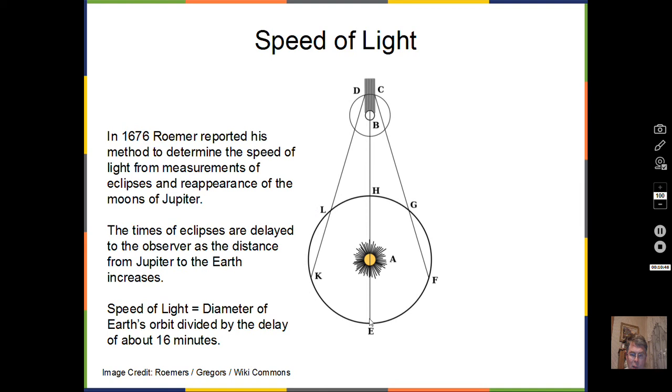Roemer studied those times of disappearing and appearing and found that there was a drift in the time they disappeared and reappeared. That drift was based on where the earth was in its orbit. If we would observe here at position H, and then we keep observing until the earth is at position E, what is found is that the times of disappearance and reappearance drift, getting later and later, until we're delayed by about 16 minutes at position E compared to position H. As we come back on this side, the eclipses get back in time in their proper ordering on the clock, back to where they should be.